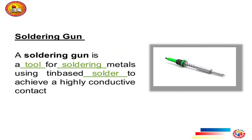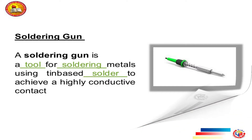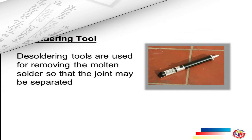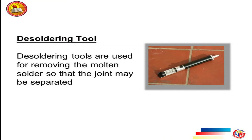Soldering gun: A soldering gun is a tool for soldering metals using tin-based solder to achieve a highly conductive contact. Desoldering tool: Desoldering tools are used for removing the molten solder so that the joint may be separated.